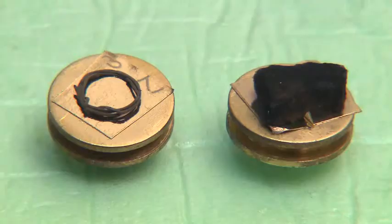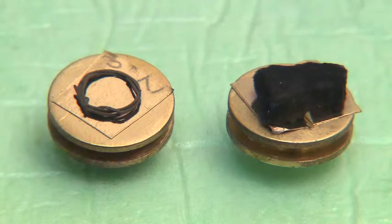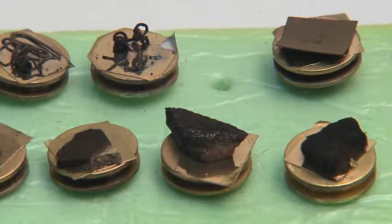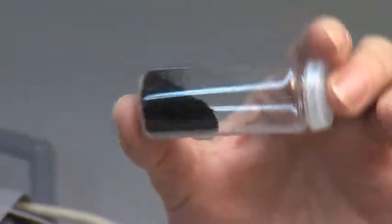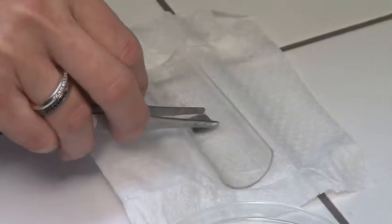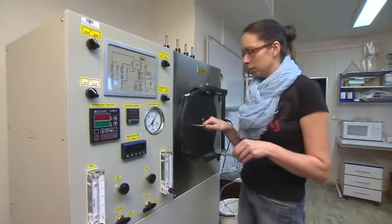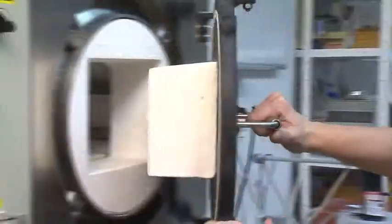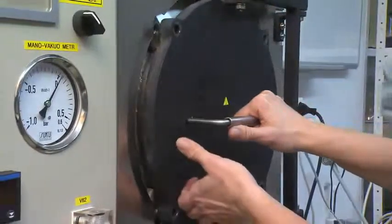We have in our lab also another method to produce not textiles or nanofiber materials, but nanotubes or nanofibers made by carbon. This method is called chemical vapor deposition that is based on the deposition of carbon nanotubes due to elevated temperature from, in our case, natural gas.